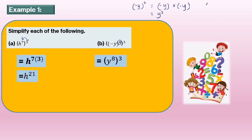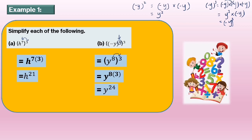If negative y to the power of 3, that is negative y times negative y times negative y. Negative times negative gives positive, so we get y² times negative y. Then positive times negative gives negative again, so the result is negative y to the power of 3. That's why when the index is an even number it becomes positive, but if the index is odd, you need to keep the negative. So for this problem, we multiply the two indices: y to the power of 8 times 3 equals y to the power of 24.